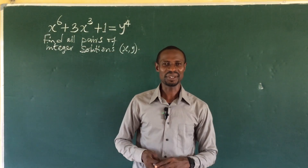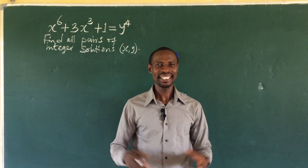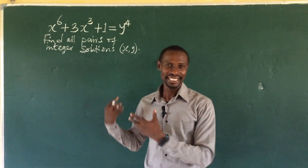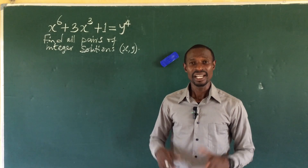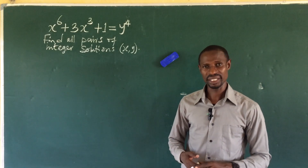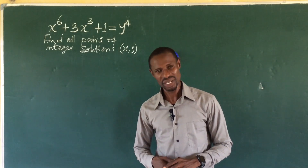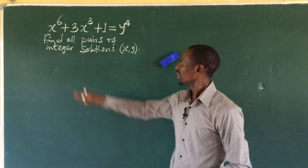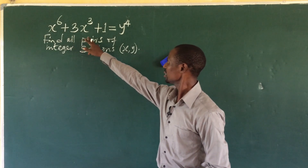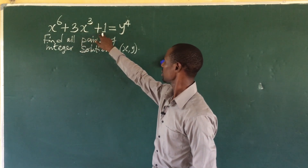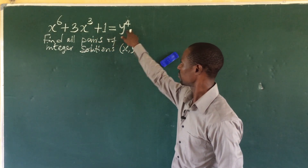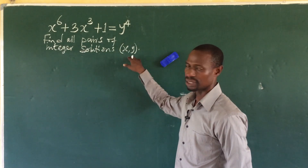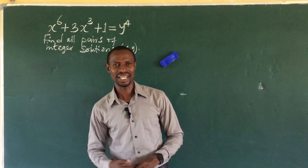Hello everyone, welcome to All I Must TV. We have a Diophantine equation — a Romanian math olympiad question. The question says: x to the power of 6 plus 3x to the power of 3 plus 1 equals y to the power of 4. Find all pairs of integer solutions for x and y that satisfy this equation.